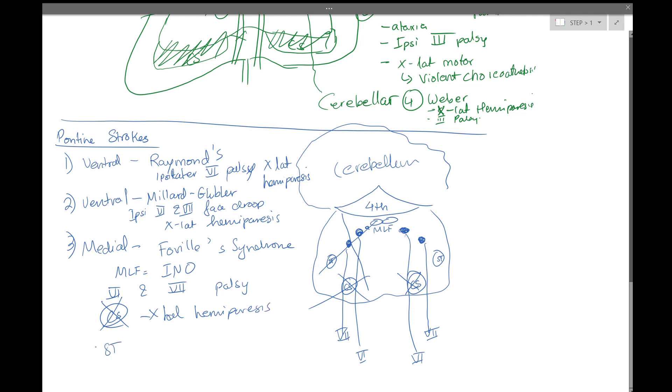And because the spinothalamic is knocked out, you can also get some sensory deficits. Once again, just like the midbrain, the pons actually is a vertical structure that has multiple cross-sections. This is a highly simplified schematic just to remind ourselves of the main pontine syndromes and pontine strokes.